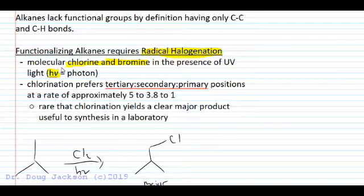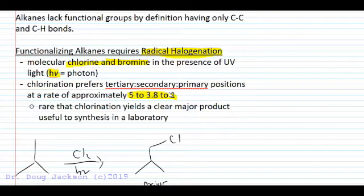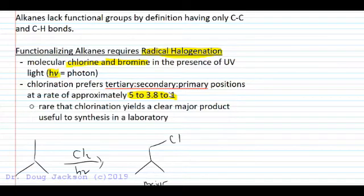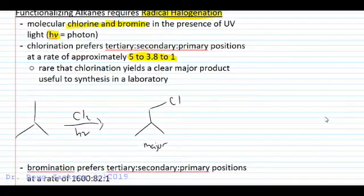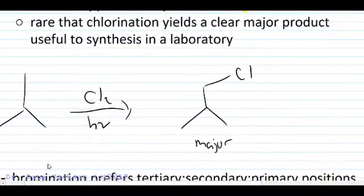We're going to have two variations. Chlorination is going to prefer substitution of tertiary carbons to secondary to primary at a rate of 5 to 3.8 to 1. This is an approximation — you'll see variations throughout textbooks, but in general about 5 to 3.8 to 1. Because this difference is not enormous, it's rare that you're going to see chlorination yield a true major product. But here's one scenario where you will see that, so let's look at it.